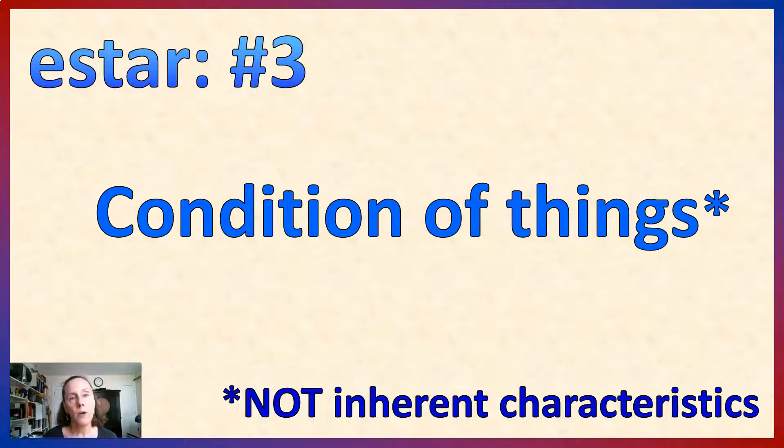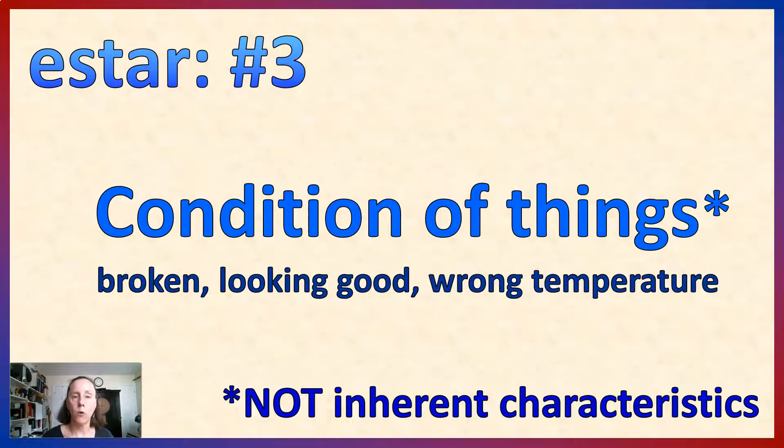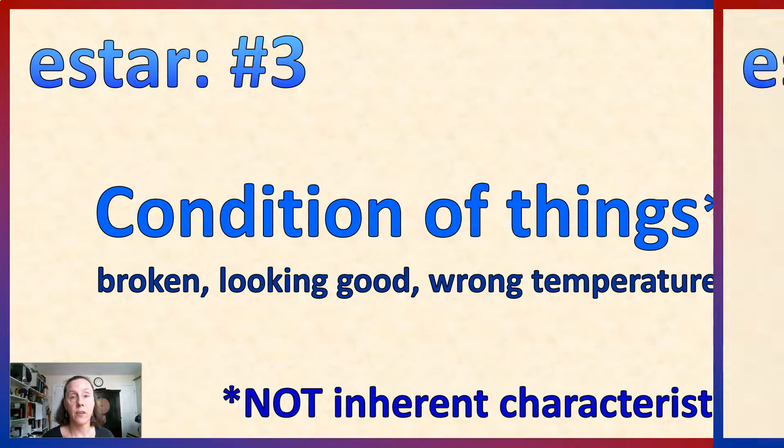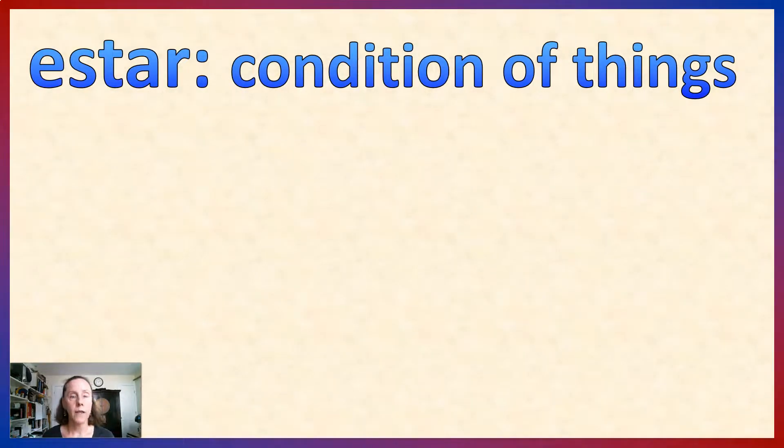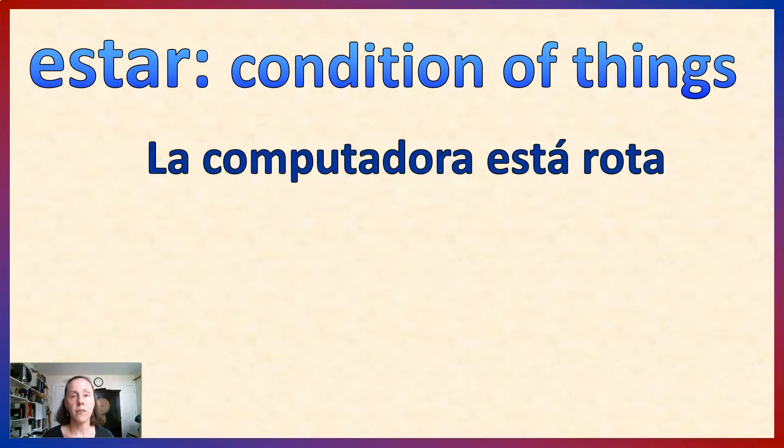When we're talking about conditions, most of the time we're talking about things being broken, whether or not someone is looking particularly nice today, if something is at the wrong temperature. So let's give you some examples. When we're talking about conditions, we're talking about things like, la computadora está rota, the computer is broken. It is not an inherent characteristic of computers to be broken, you wouldn't buy it that way. This computer, something happened to it, it's now in pieces.